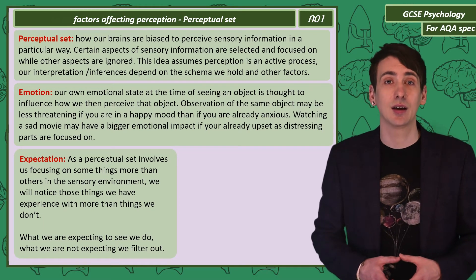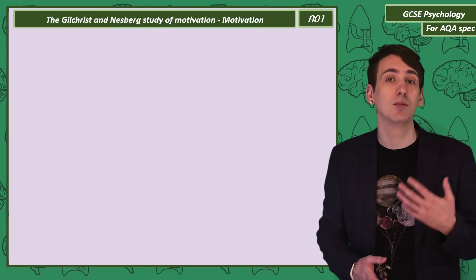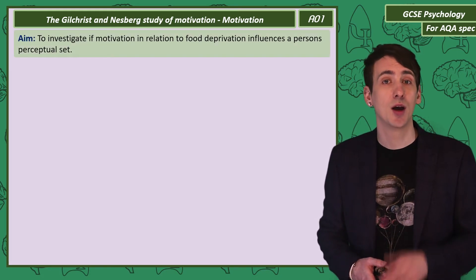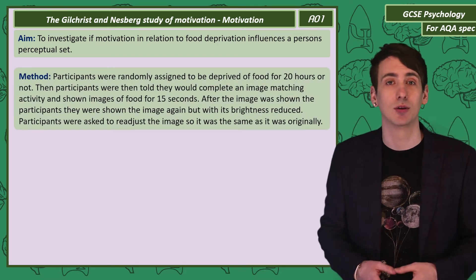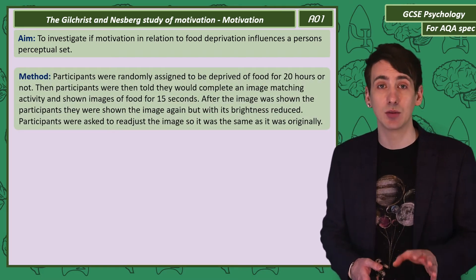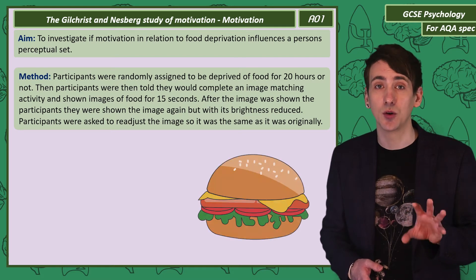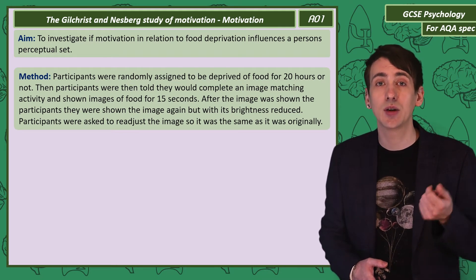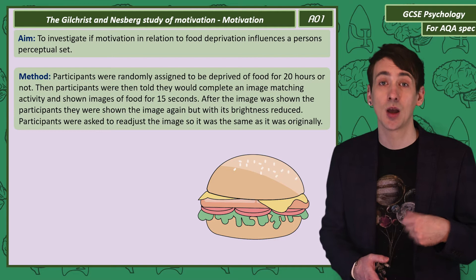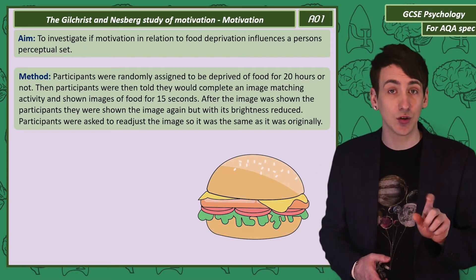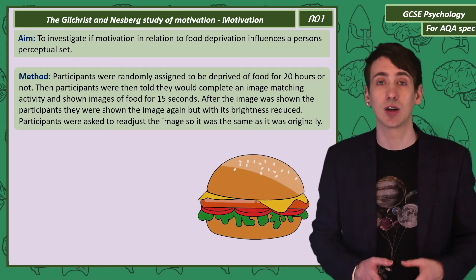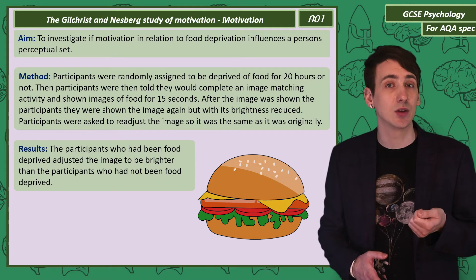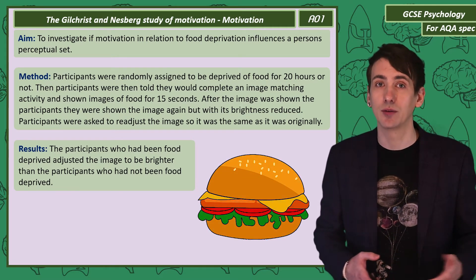Gilchrist and Nesberg investigated if motivation for food influenced perceptual set. They assigned participants to either be deprived of food for 20 hours or not at all. Both groups were told they would be matching images and were shown images of food for 15 seconds. After the image was shown it was turned off, then shown again with the image's brightness reduced. The participants were then asked to readjust the image to have the same brightness as the original.